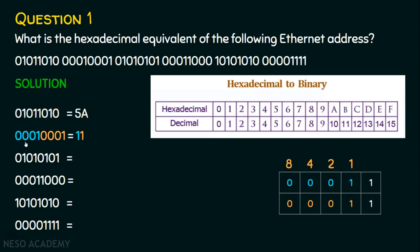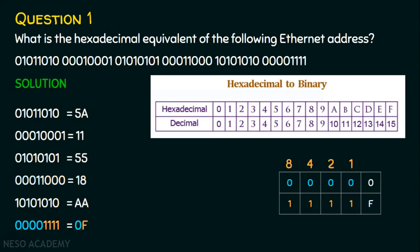Let's see the second byte. The second byte's hexadecimal equivalent is 11. The first half is 0001 and the second half is also 0001 — both the same. Placing 0001 in the 8421 table gives a decimal equivalent of 1, which is hexadecimal 1. So we get 11. Using the same approach, the third byte is 55, the fourth byte is 18, and the fifth byte is AA.